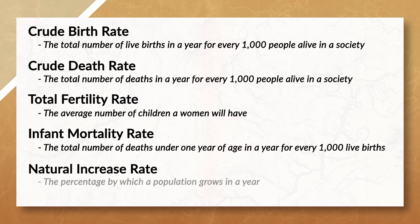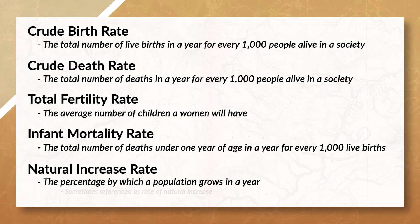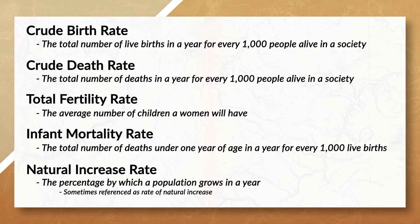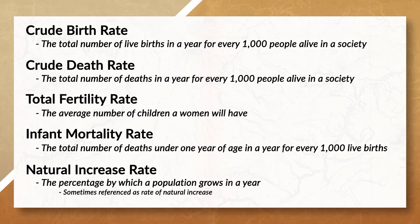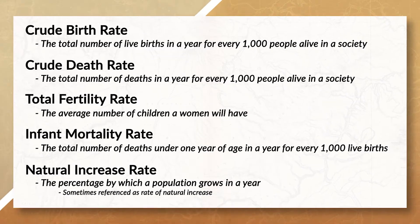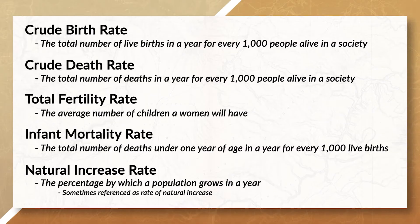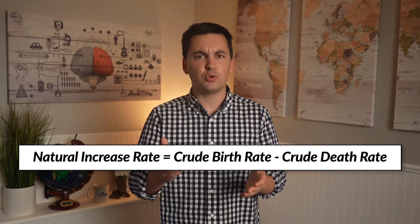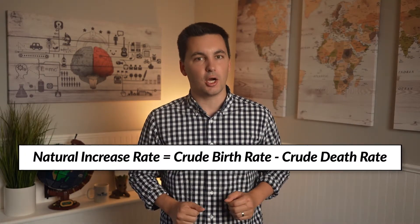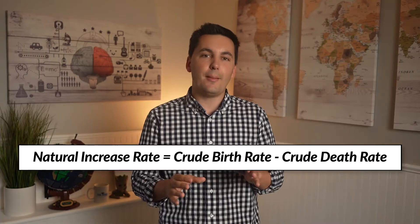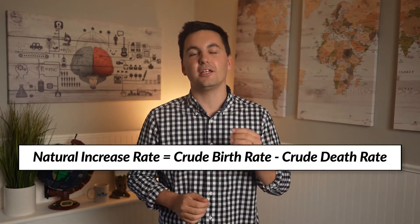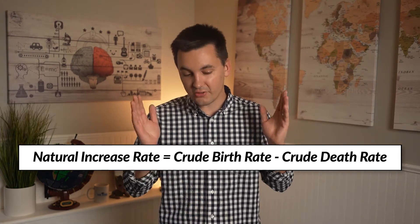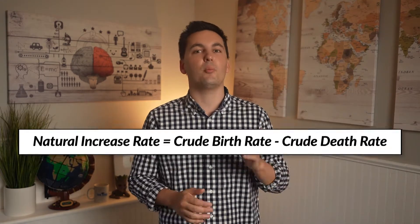And lastly, natural increase rate — sometimes referenced as rate of natural increase — which is a percentage by which a population grows in a year. To find this, you take a society's CBR and subtract its CDR. One thing to remember is that the NIR only looks at natural births and deaths; it does not take into account migration.